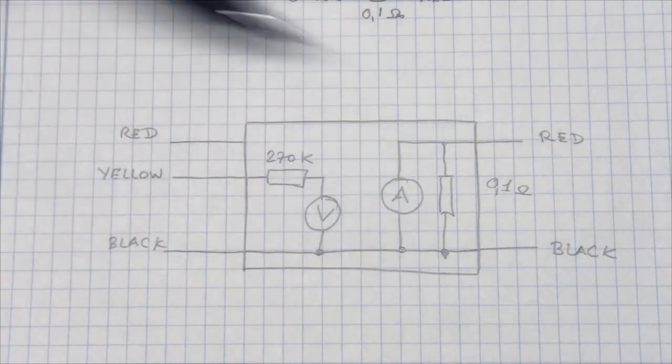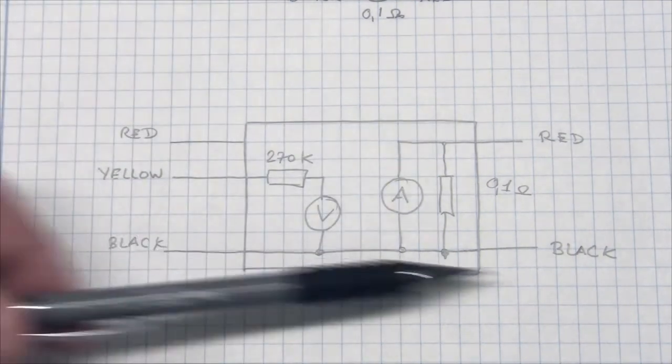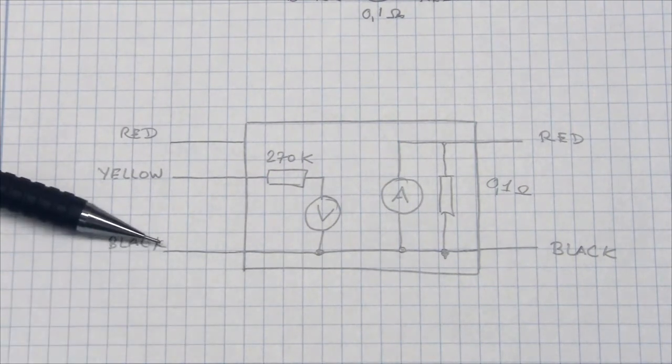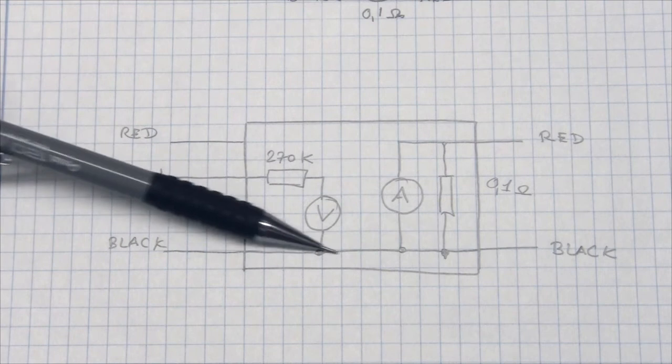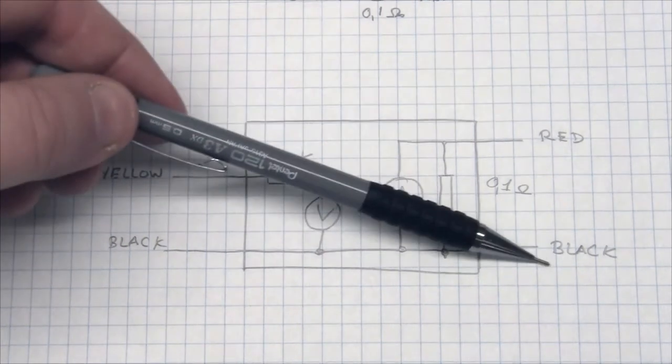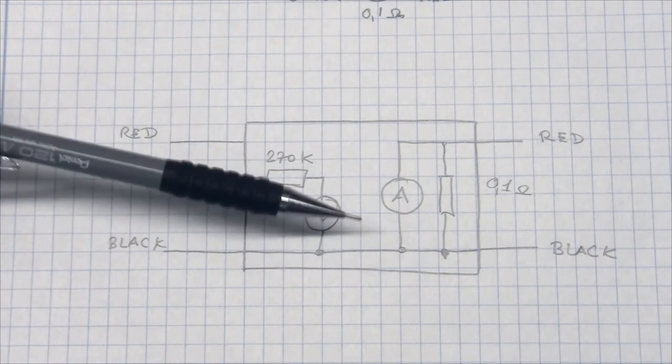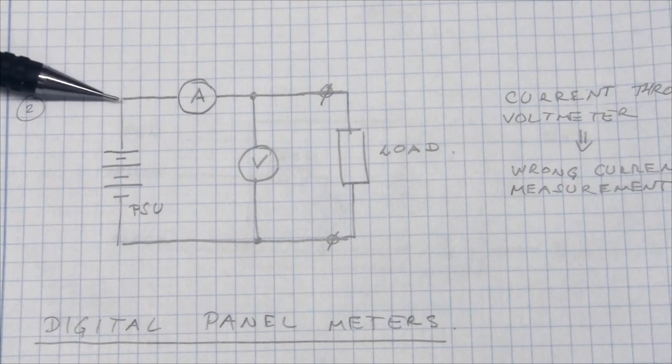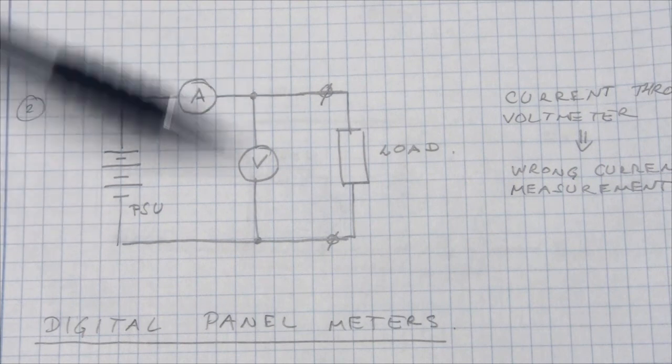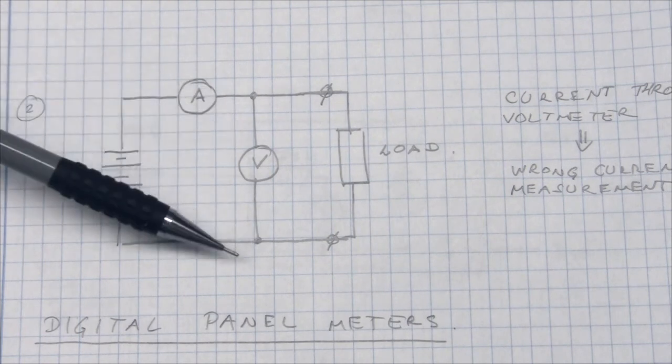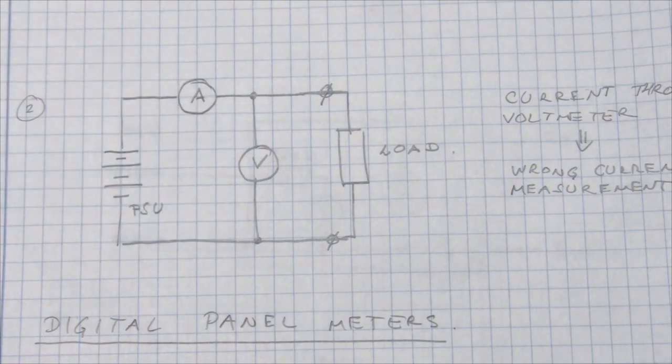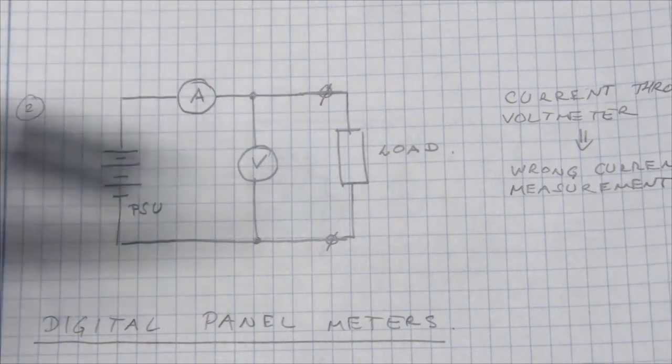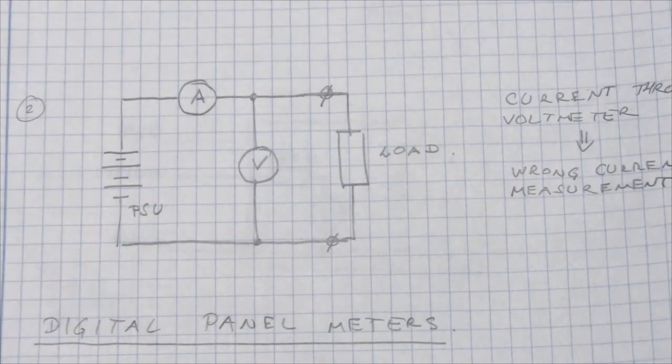The issue that we have with this panel meter is that they have a common ground. This black wire on the voltmeter is connected here to the black wire on the amp meter. And this gives us a little bit of a problem. If we look at configuration number two, we see that the amp meter is connected to the power supply and not connected to ground, while the voltmeter is in fact connected to ground. So the trick to using this panel meter from eBay is to redraw this circuit a little bit. And you will see how that works.